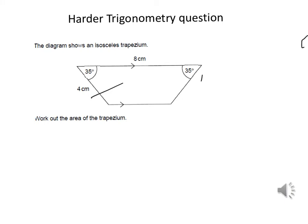The area of a trapezium is: add together the parallel sides, multiply by the height, then divide by 2 — or half times H times (A plus B). Here we have parallel sides A and B, and we need to work out the height. I'm going to take this right-angled triangle with an angle of 35 degrees, and we know the hypotenuse is 4. From this triangle I can work out the height H.